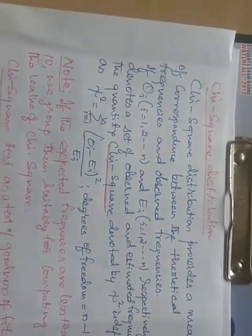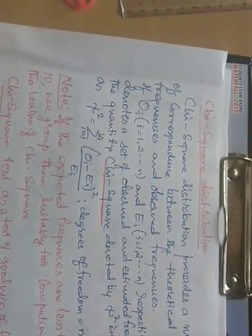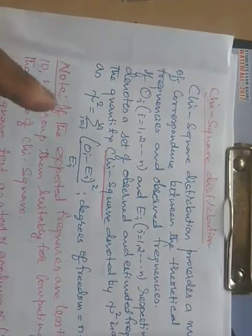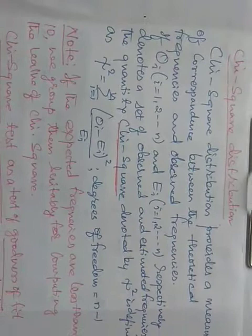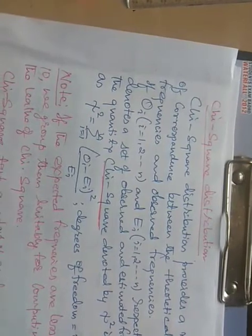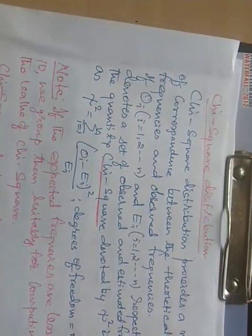The quantity of chi-square denoted by chi-square is defined as the formula shown here, and degrees of freedom will be n-1. And take a note here: if the expected frequencies are less than 10, we group them suitably for computing the values of chi-square.